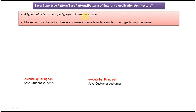This is the explanation. A type that acts as a super type for all types in its layer. The second point is: it moves common behavior of several classes in the same layer to a single super type to improve reuse.